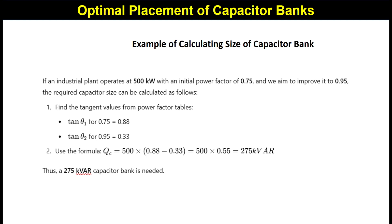The tan θ1 value for 0.75 and tan θ2 value for 0.95 are 0.88 and 0.33 respectively. The active power P is 500 kW. Using the formula: QC = 500 × (0.88 − 0.33) = 500 × 0.55 = 275 kVAR. Note: you must find θ1 by computing cos⁻¹(0.75) and θ2 by computing cos⁻¹(0.95), then take the tangent of those angles. A common mistake is taking 0.75 and 0.95 directly as the angle values, which gives a wrong result.